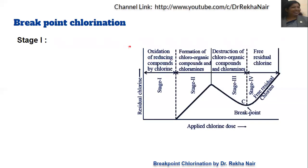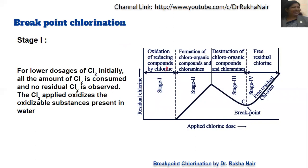In Stage 1, which is the oxidation of reducing compounds by chlorine, as we increase the applied chlorine dose along the x-axis, the chlorine sent into the water is completely utilized. Residual chlorine remains at zero — the chlorine applied is consumed entirely in oxidizing the reducing compounds present in the water.